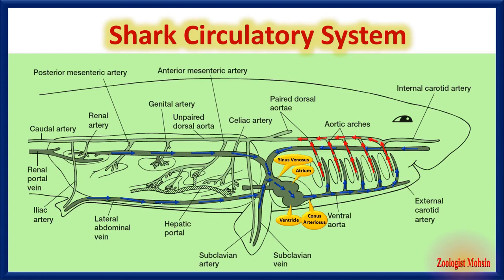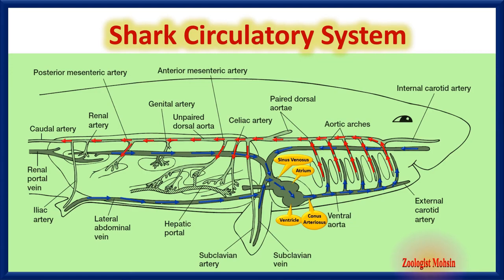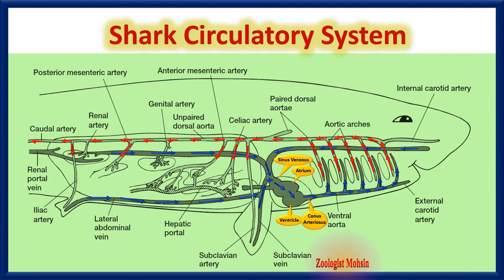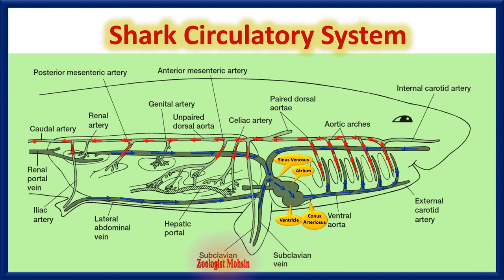When blood becomes oxygenated — rich in oxygen — it is sent to the aortic arches and then to the dorsal aorta. The dorsal aorta, as the name suggests, lies on the dorsal side toward the vertebral column. It then supplies blood to all parts of the body with respective arteries — for example, celiac arteries supply blood to the stomach and esophagus, genital arteries to gonads, renal arteries to kidneys, subclavian arteries to fore fins, and iliac arteries to hind fins.